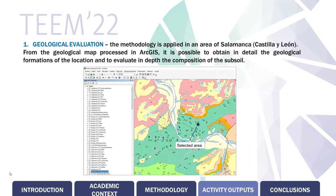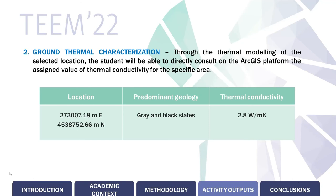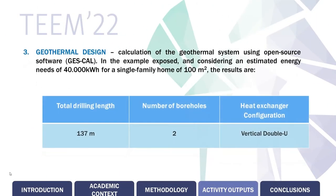As activity outputs, we can see that we will first have the geological evaluation — in this case for the selected area of Salamanca in Castilla and León — so it is possible to obtain in detail the geological formation of the location to evaluate in depth the composition of the underground. The second output will be the ground thermal characterization, in which we will have the predominant geology and the thermal conductivity of the area. The third step will be the geothermal design, in which we will use OpenSURT software — in this case the SCAL tool — and for the activity example here proposed, we will have the information that you can see on the screen.